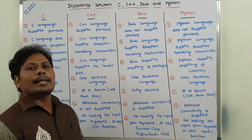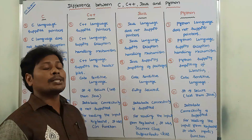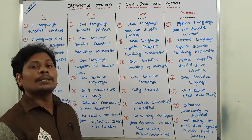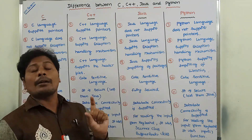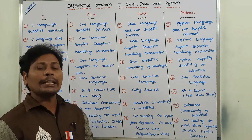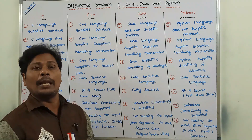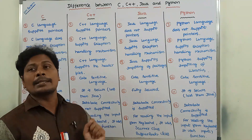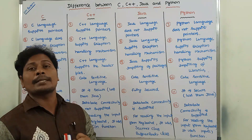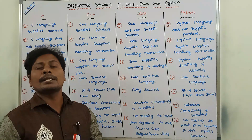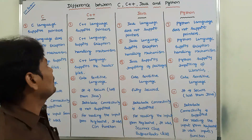Next point: C language supports pointers. C++ language also supports pointers. Java does not support pointers, and Python also does not support pointers. Java does not support pointers because of security reasons.